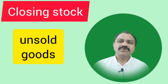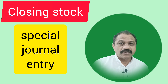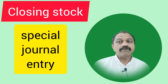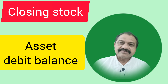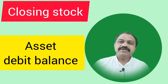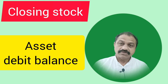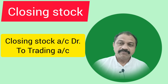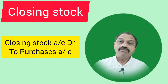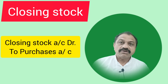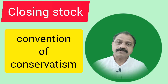But if a part of the purchases remains unsold, it is called Closing Stock. It is recorded in the business by passing a special journal entry at the end of the accounting year. Since closing stock is an asset, it is debited and the journal entry may be either: number one, closing stock account to trading account, or number two, closing stock account to purchases account. The difference I will explain at a later stage.